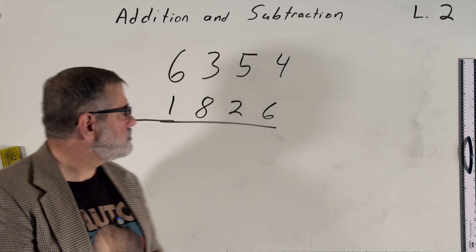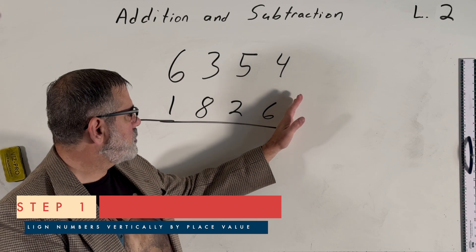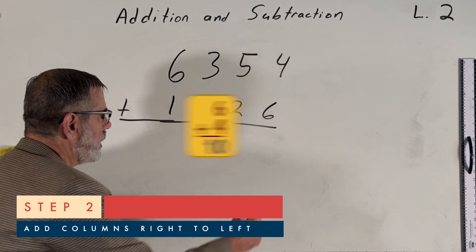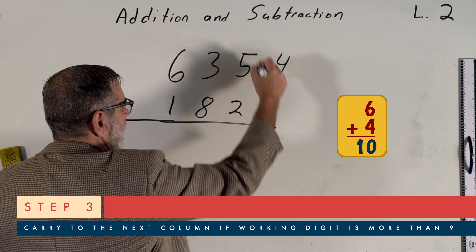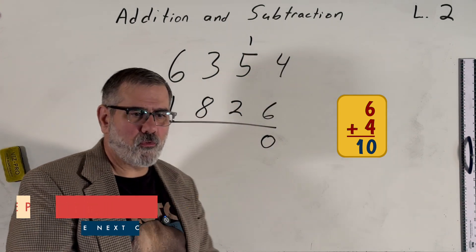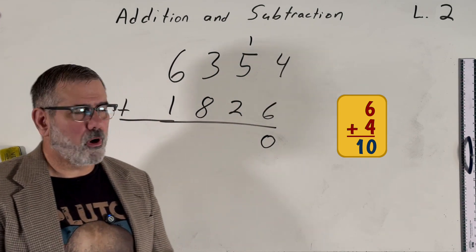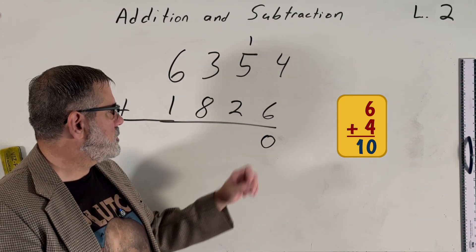Okay. So we already have this written out vertically and aligned by place value. So we start on the rightmost column, 6 plus 4 is 10. So immediately you see that we must carry the 1 from 10 over to the next column, leaving the 0 from 10 here, because we had to trade those 10 $1 bills in for one $10 bill, leaving us with no $1 bills, hence the 0 here.